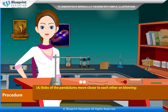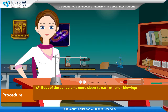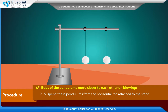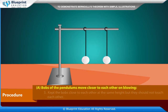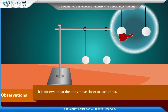Procedure. The first situation is: bobs of the pendulum move closer to each other on blowing. Take two simple pendulums A and B made of thread and lightweight small balls. Suspend these pendulums from the horizontal rod attached to the stand. Keep the bobs close to each other at the same height but they should not touch each other. Blow air between the two bobs and observe them. Observation: it is observed that the bobs move closer to each other.